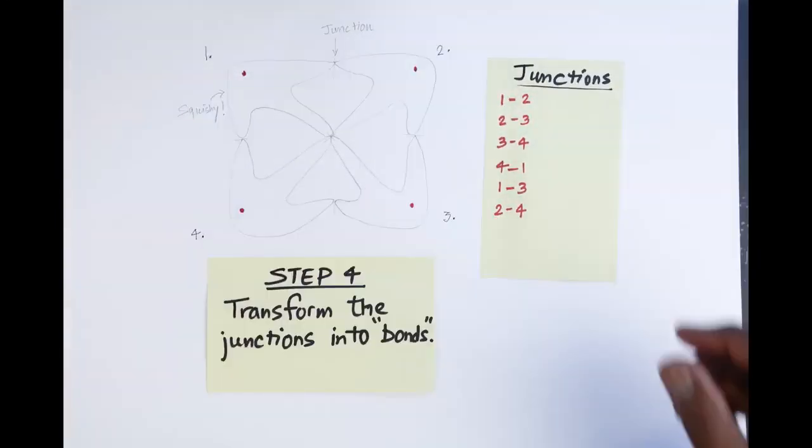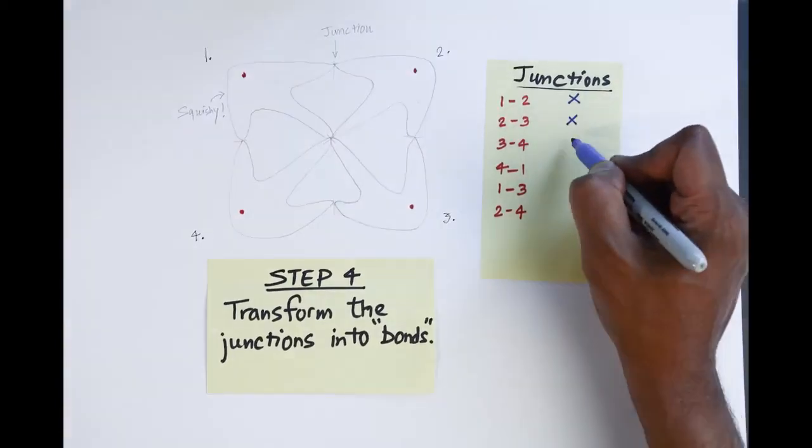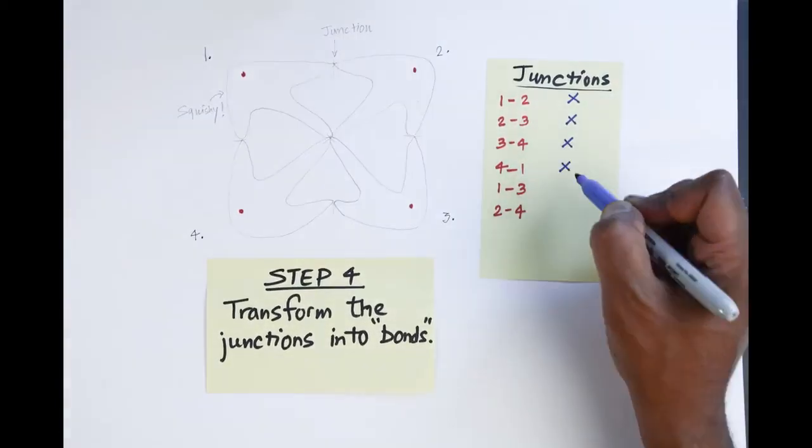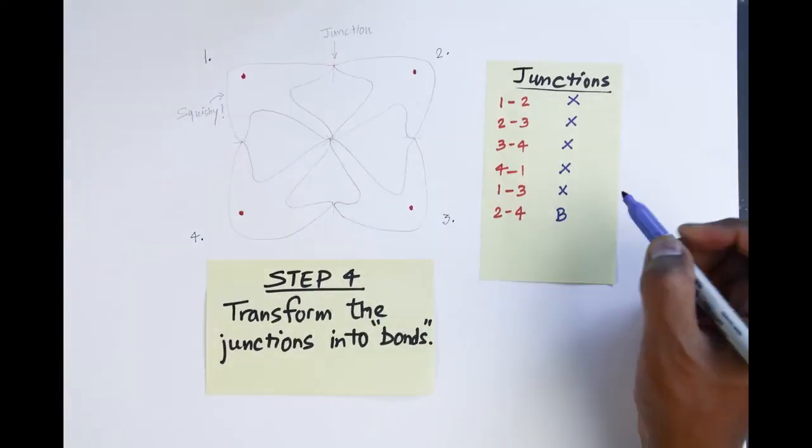So going back to the junctions we just drew, let's randomly choose to transform five of those junctions into cross bonds or x bonds and one of them into a broken bond or b bond.